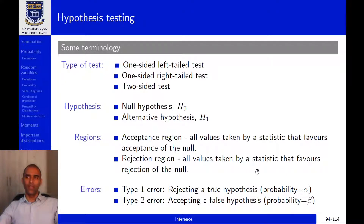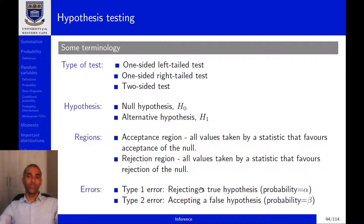Later on, in one of the hypothesis testing examples — I think in Chapter 5 — I'll go into an example of thinking about this trade-off between Type 1 and Type 2 error.